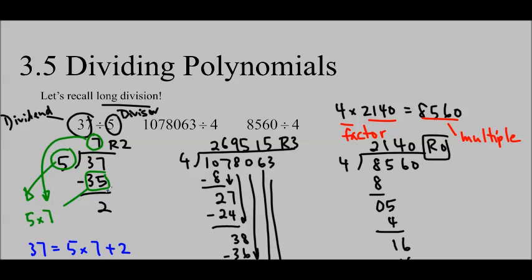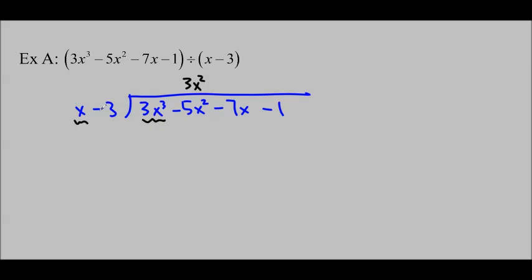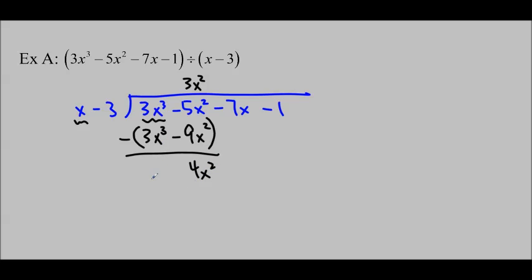Just like with numbers where 35 is 5 times 7, here I'm going to write (x minus 3) times 3x squared underneath the next line. 3x squared times x is 3x cubed. 3x squared times negative 3 is negative 9x squared. Just like before, I'm subtracting off the answer, so I need to subtract both of these terms. Make sure you change this sign into a plus. Negative 5x squared minus negative 9x squared gives me 4x squared. And 3x cubed minus 3x cubed gives me 0.